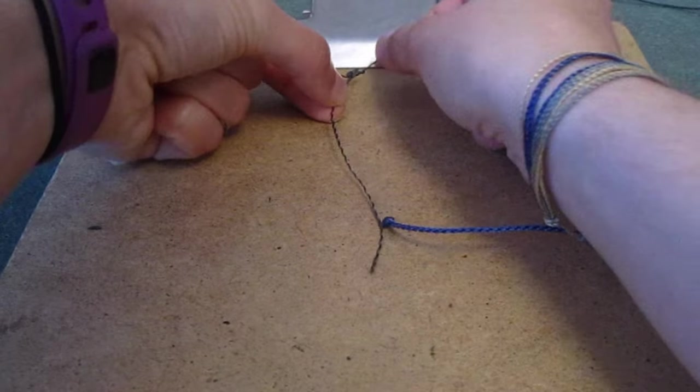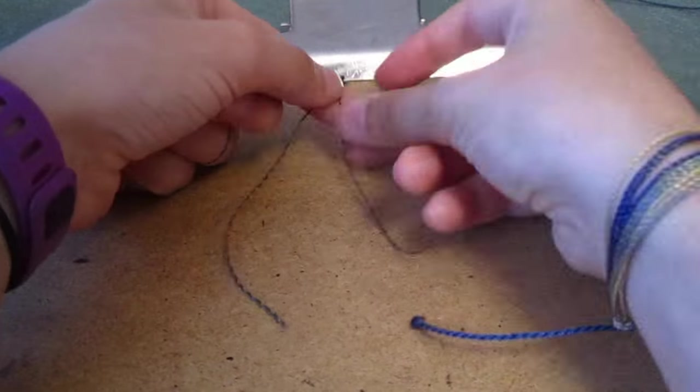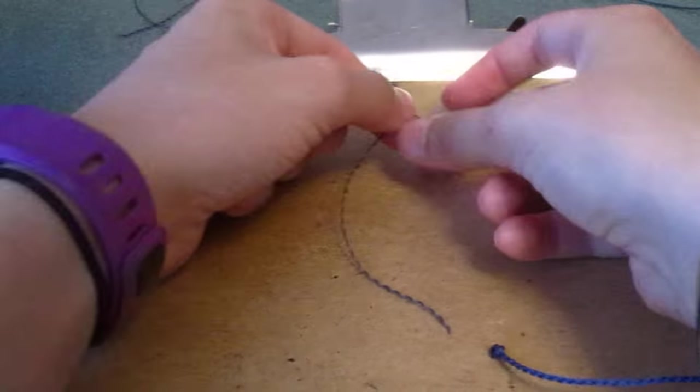Making an additional square knot, I then proceeded to braid these ends together to form one half of the closure.